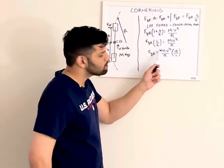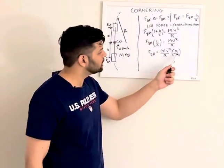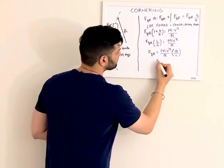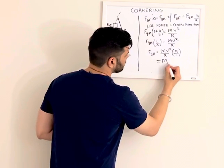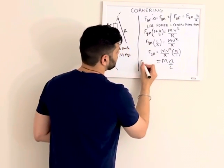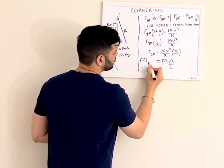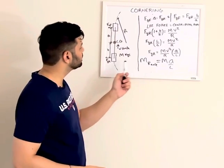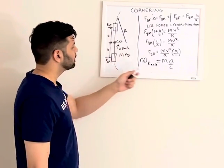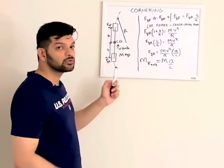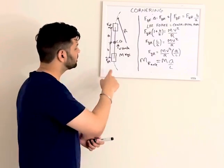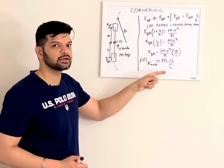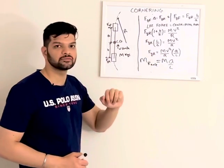So now if you look at it, mass of the entire vehicle times this, this is nothing but distribution of M times this thing. A over L is M on rear axle. This is the distribution of mass on the rear axle because this is the smaller value, and this is the amount of weight, which is the amount of weight or the mass which is loaded on the rear tire.